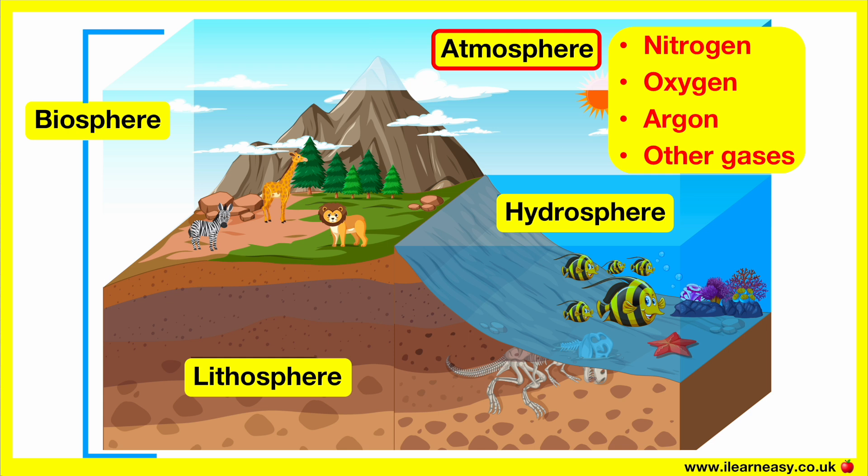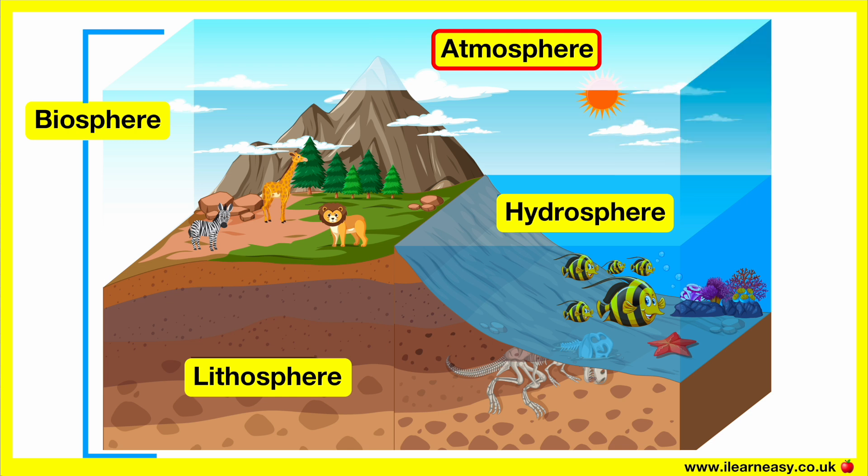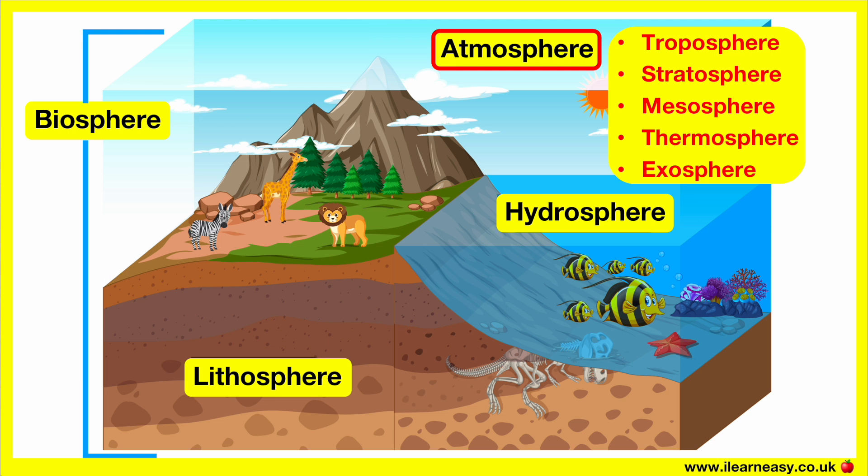The atmosphere itself can be further separated into five layers. These include the troposphere, stratosphere, mesosphere, thermosphere and exosphere.